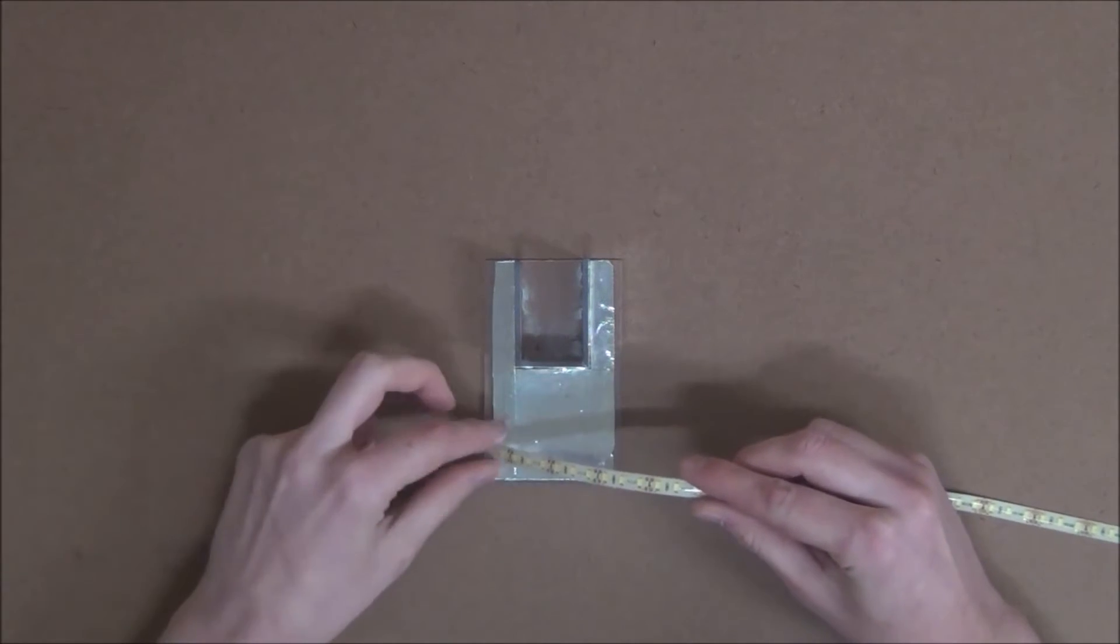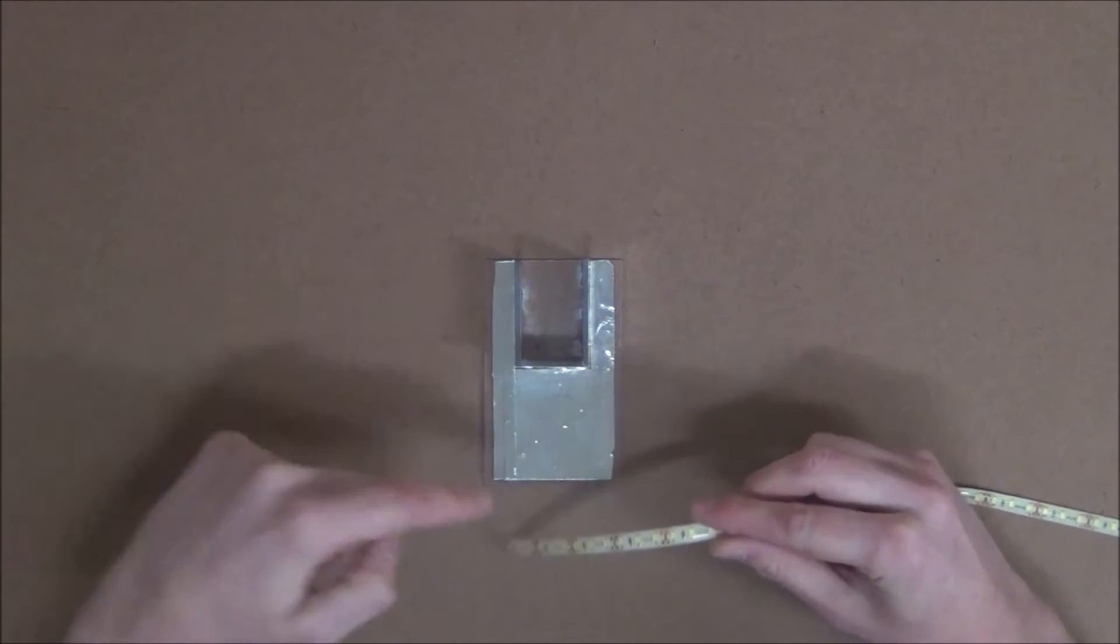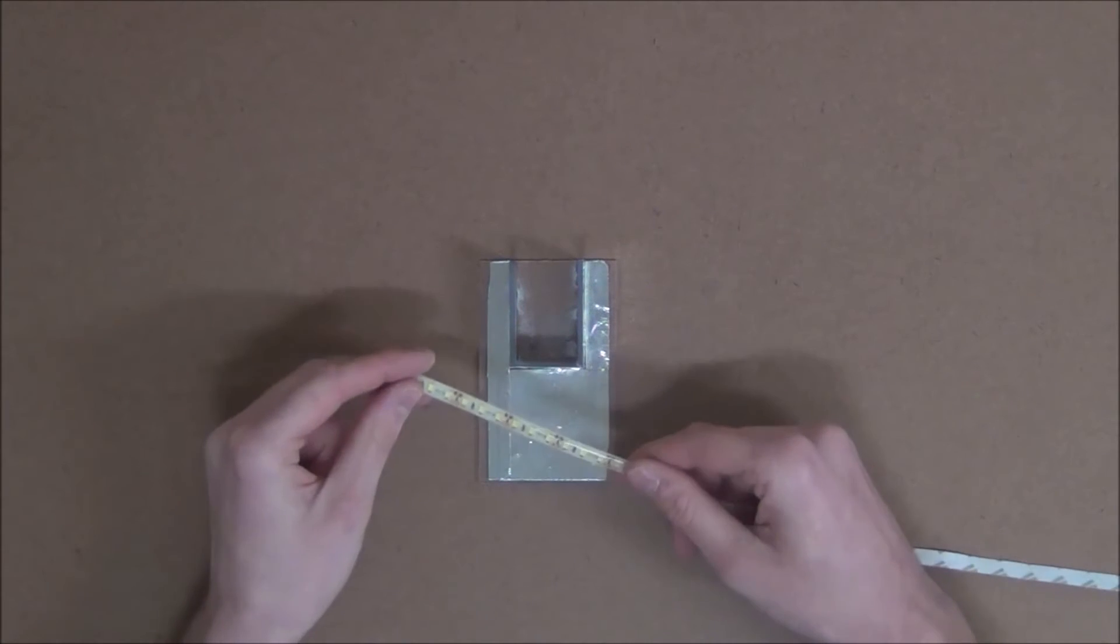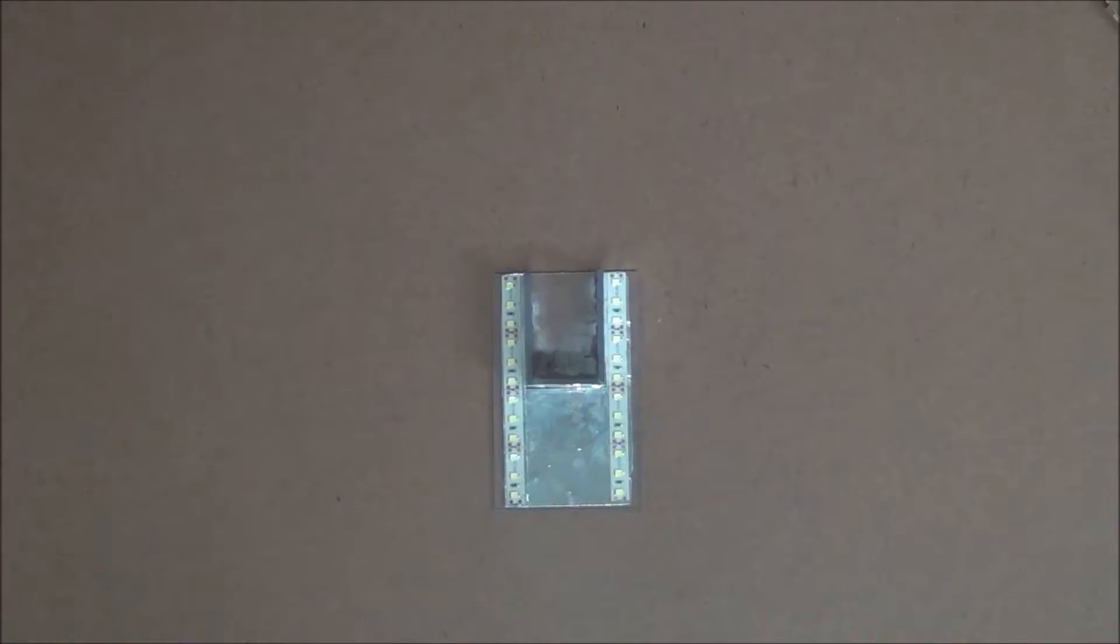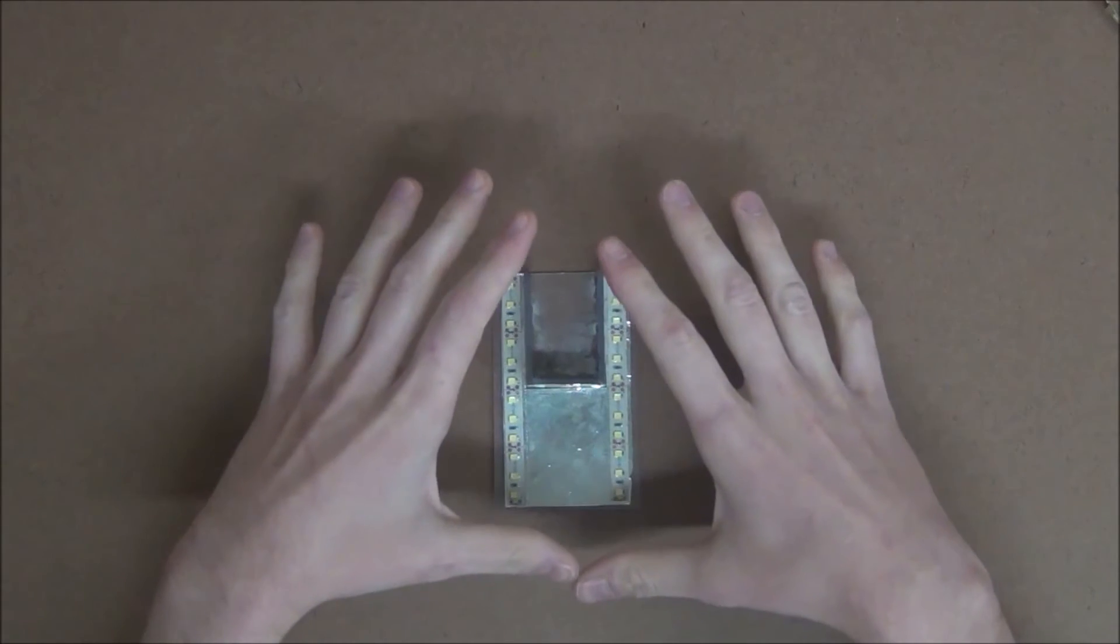Next, we can cut two pieces of our LED strip that match the length of our base plate. We can then remove the tape from the underside of the LEDs and stick them in place. Now we can start the wiring process.